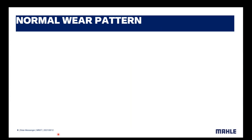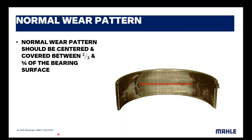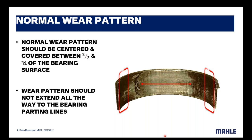The normal wear pattern should be centered and cover between two-thirds to three-quarters of the bearing surface. As you can see with the arrows here, that is the typical normal wear pattern you would want to see. What we don't want is for the normal wear pattern to extend all the way to the parting lines. There's a bore relief on the sides — that's the widest part of the bearing, and it's there to accept for cap misalignment and cap shift. If bearing wear would exceed all the way into the bore relief area, that would definitely be an issue.